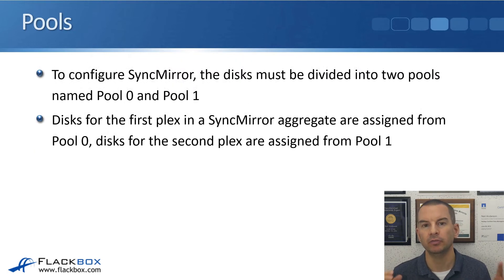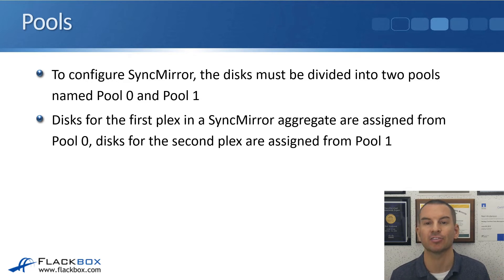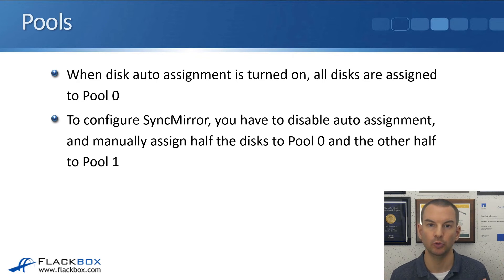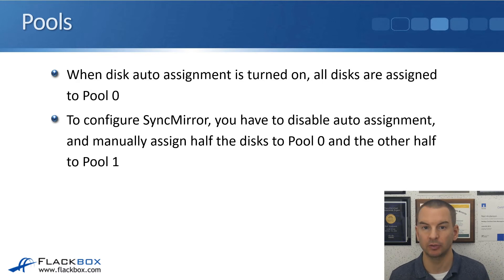To configure SyncMirror, the disks must be divided into two pools named pool zero and pool one. Disks for the first plex in each SyncMirror aggregate are assigned from pool zero, and disks for the second plex are assigned from pool one. When disk auto-assignment is turned on, which is the default, all disks are assigned to pool zero. To configure SyncMirror, you have to disable auto-assignment and manually assign half the disks to pool zero and the other half to pool one.